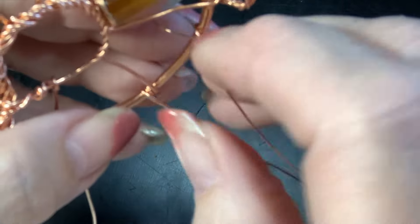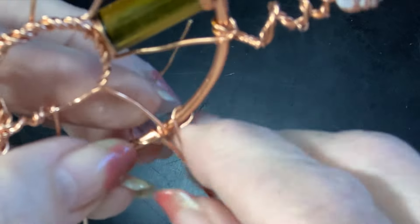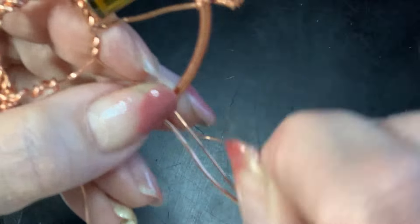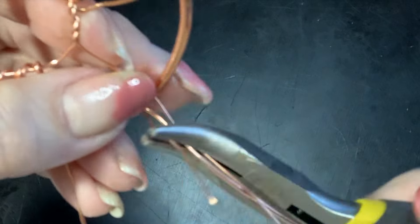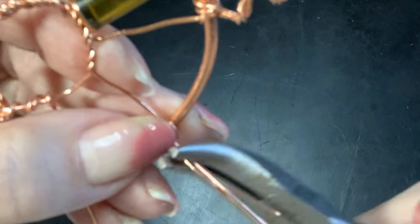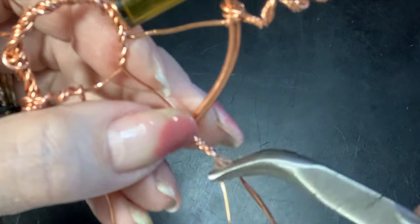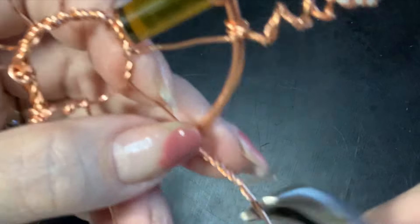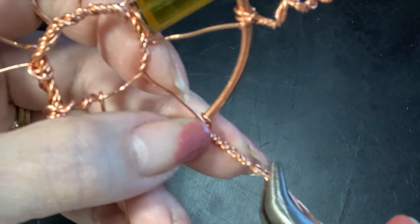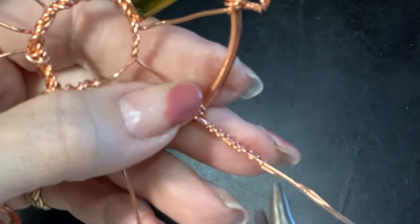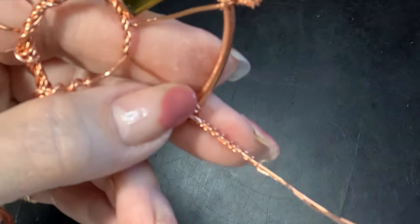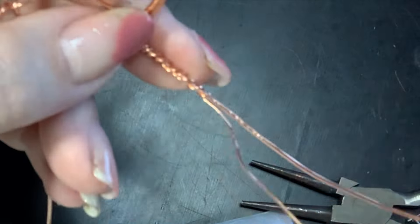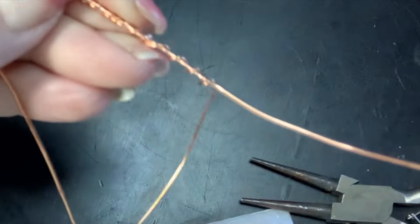One of the reasons I'm using this 22 gauge wire that I'm attaching right now is the quartz crystals that I bought, the holes aren't large enough to go through the 18 gauge wire. But I did want the strength of the 18 gauge wire both for visualness and for more power in attracting energy.